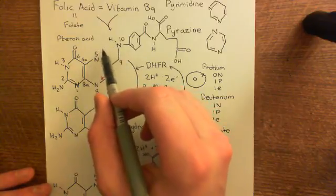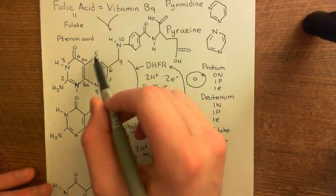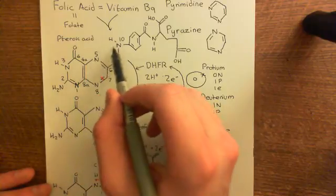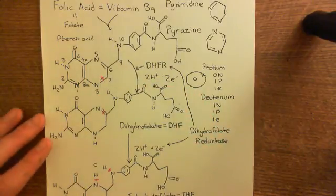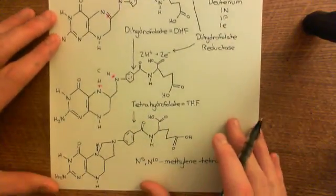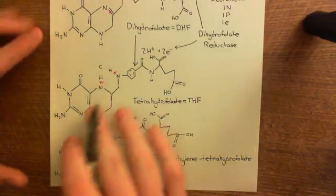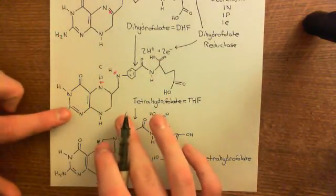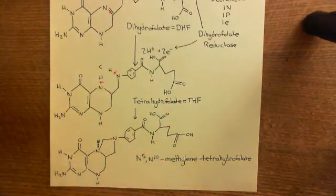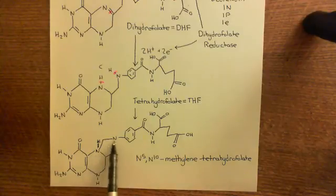You can see now the logic in saying N5, N10, methylene, tetrahydrofolate, because we have put a methylene in between the fifth and the tenth nitrogen on this molecule, basically.